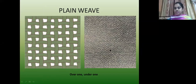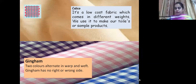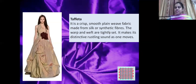Plain weave is a low cost fabric which comes in different weights; we use it to make toiles or sample products. Then there is gingham — two colors alternating warp and weft — and gingham has no right or wrong side. Then taffeta — it is a crisp, smooth, plain weave fabric made of silk or synthetic fiber; the warp and weft are very tightly set and it makes a distinctive rustling sound when one moves.